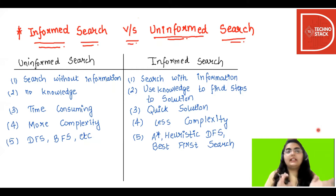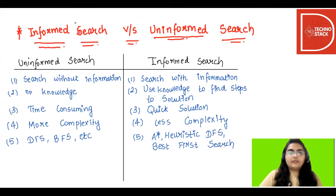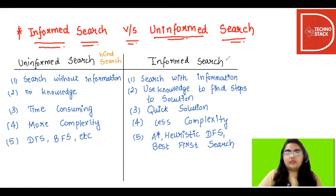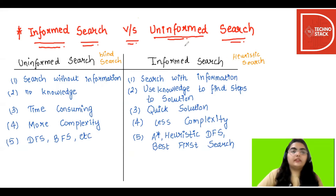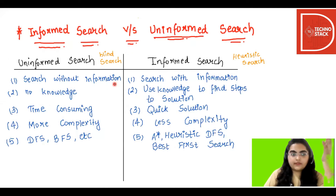Uninformed search is also known as blind search, and informed search is also known as heuristic search. Now let's see the differences between the two.